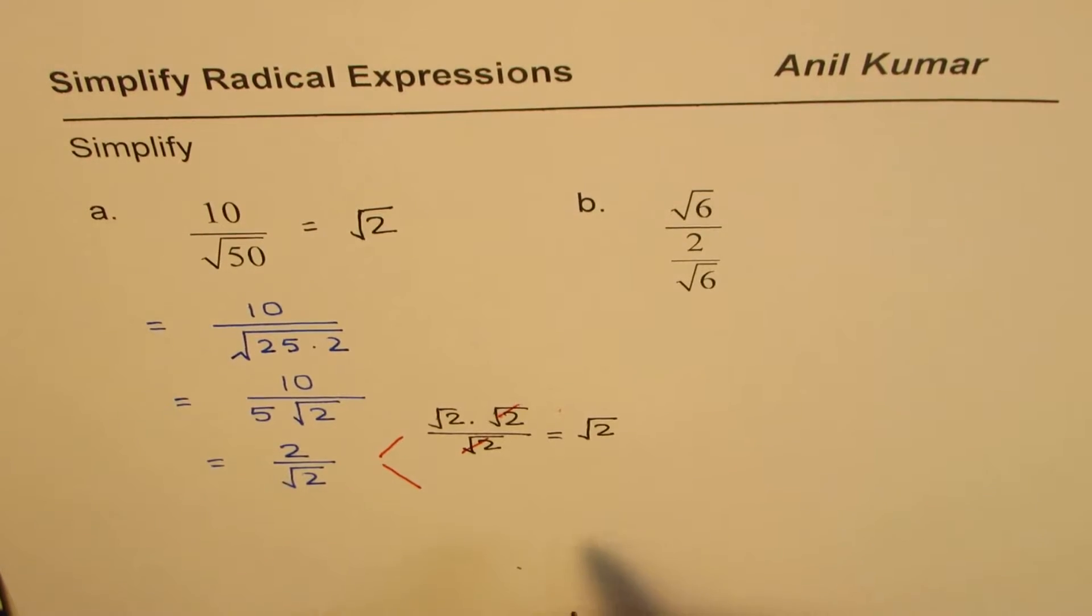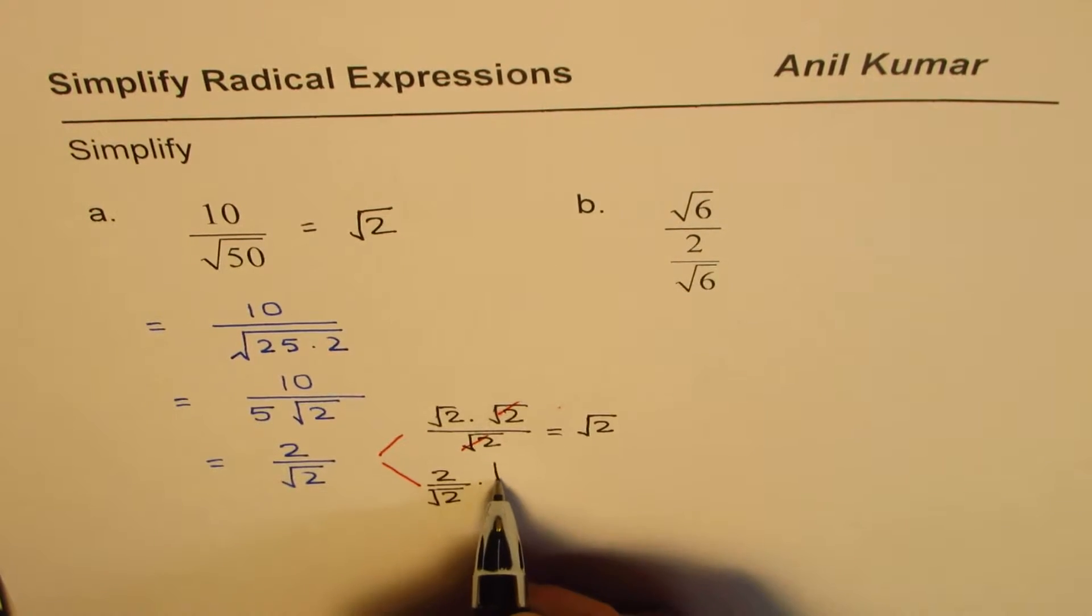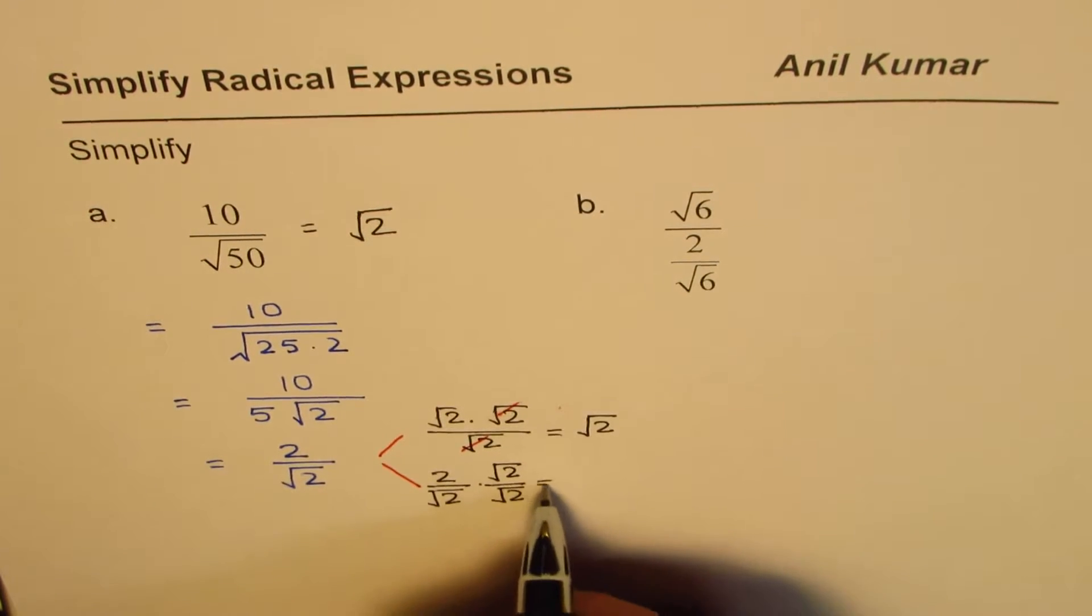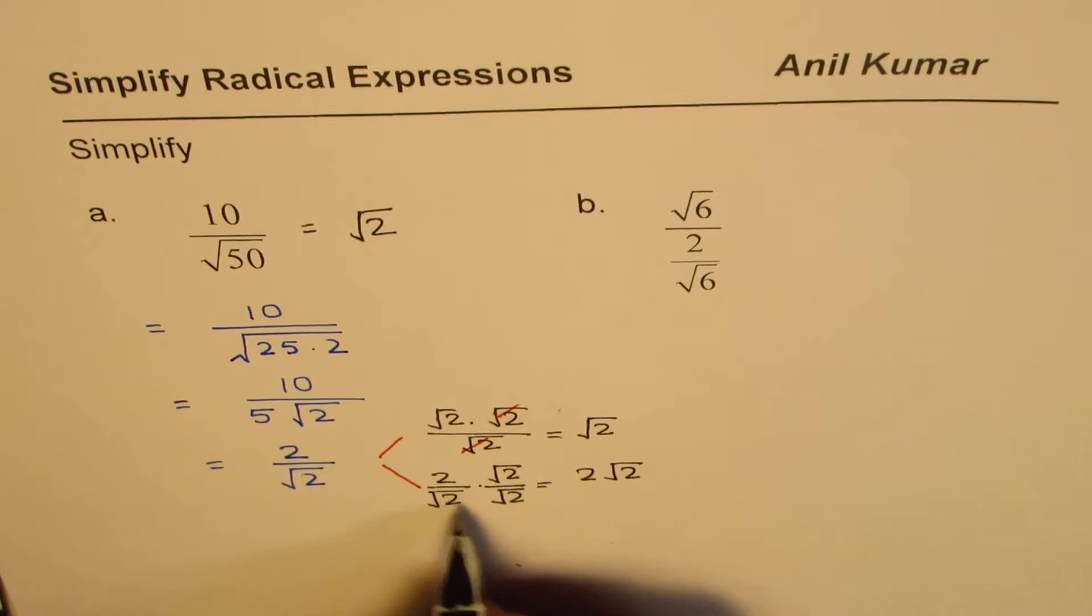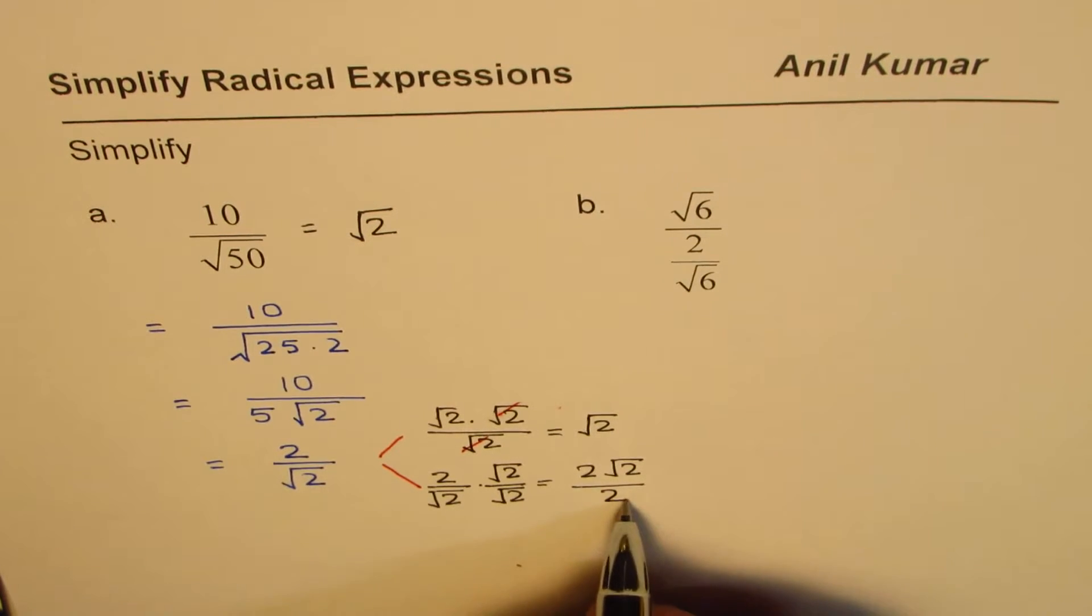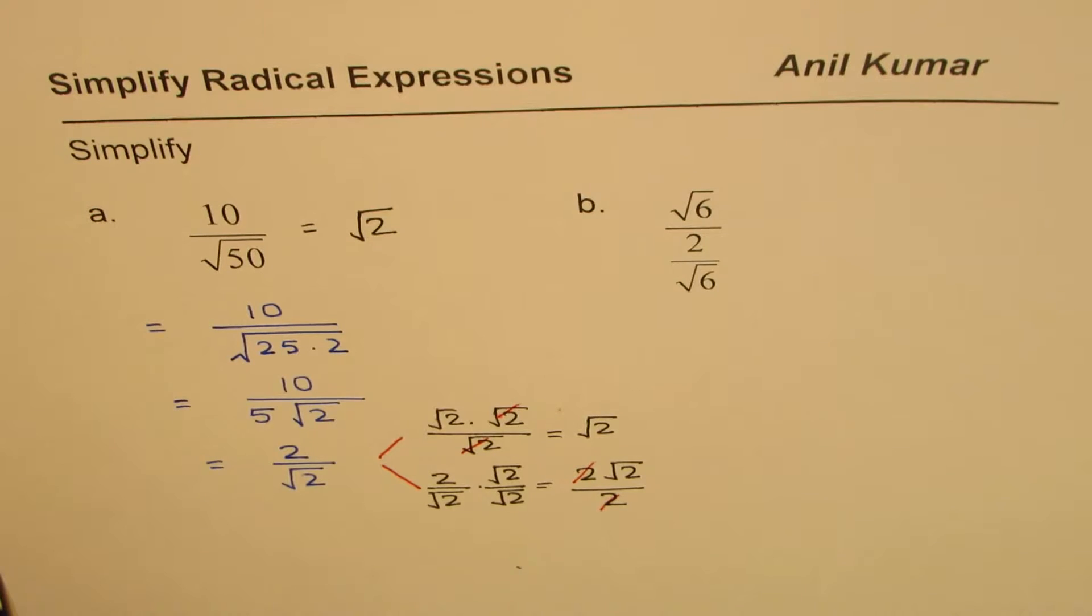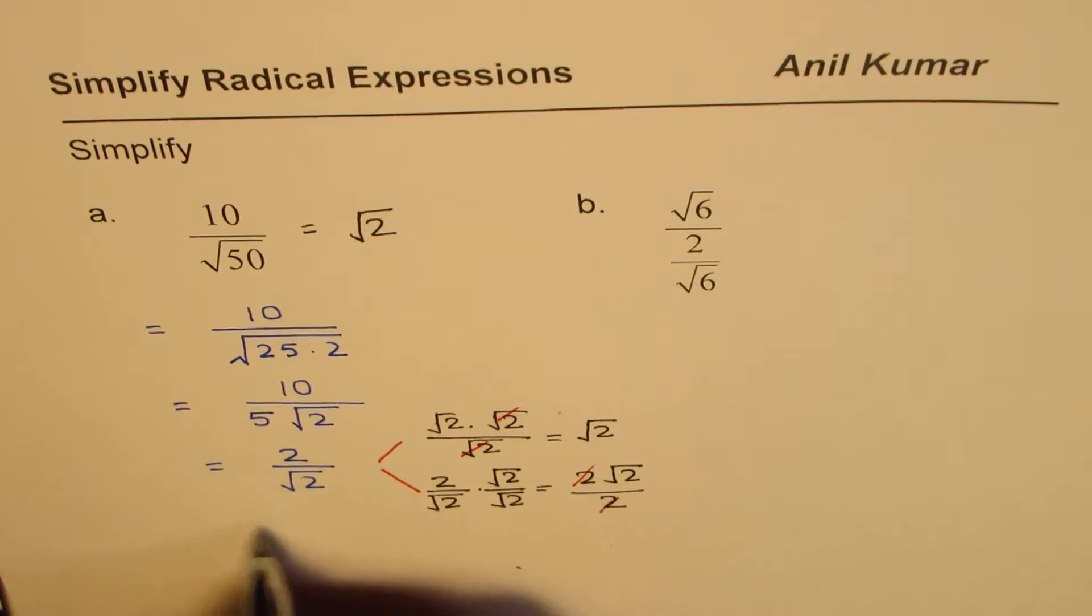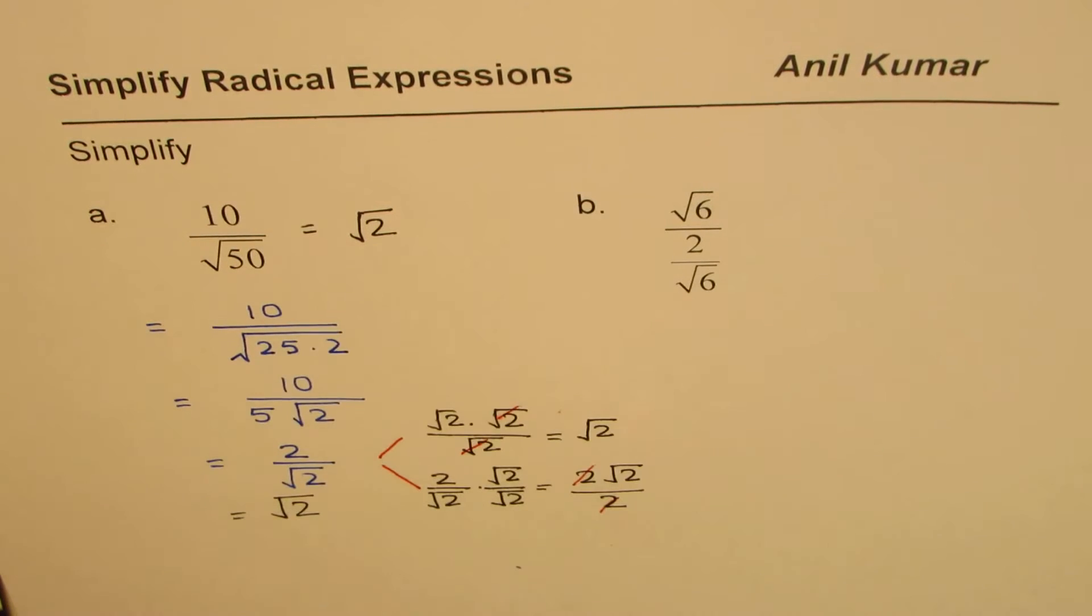The other way is to rationalize. So what we can do is we have 2 over square root 2. We can multiply and divide by square root 2. So that gives us 2 square root 2 in the numerator, and square root 2 times square root 2 is 2. And now we can cancel 2s to get the answer, which is equal to square root 2. So either way we get the same answer.